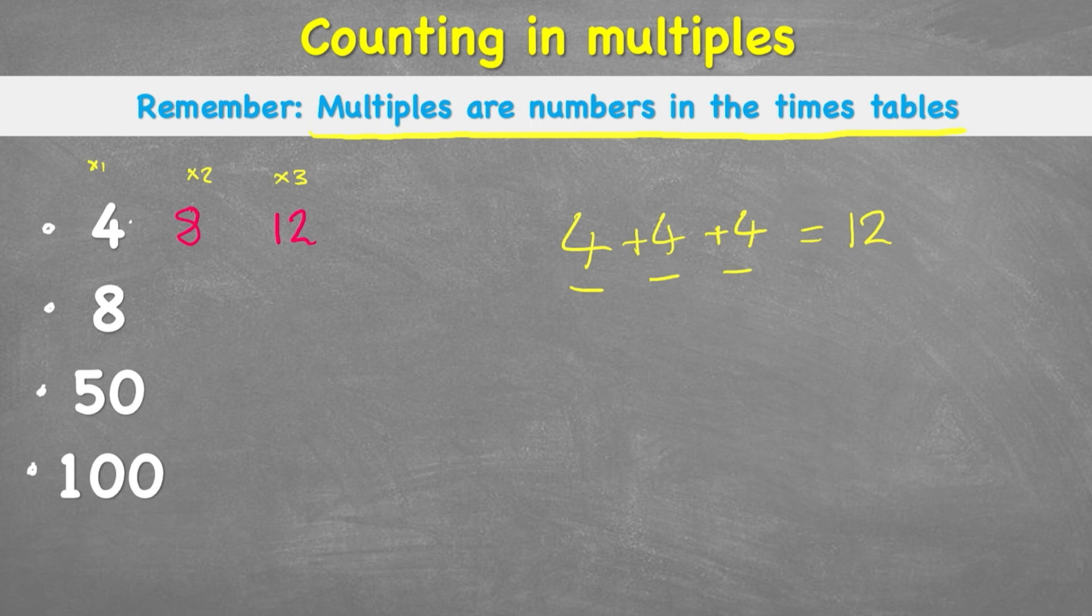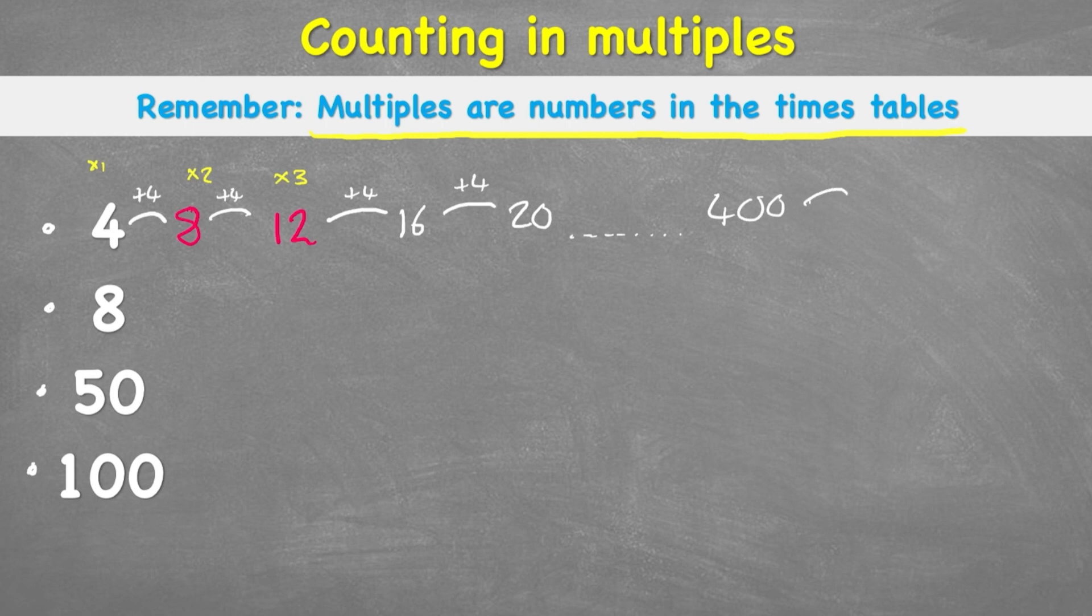Because what we should notice is all of these jumps are just adding on 4. So therefore 12 adding another 4 becomes 16, and then 16 adding 4 would get to 20. And when we're talking about multiples, we can actually theoretically go on forever. I could end up with 400 for example, and then the next one add 4 could be 404. So our multiples can just keep going infinitely.